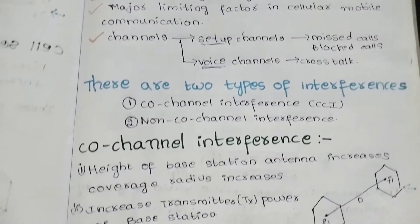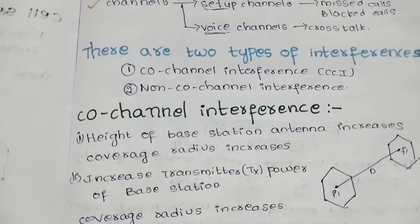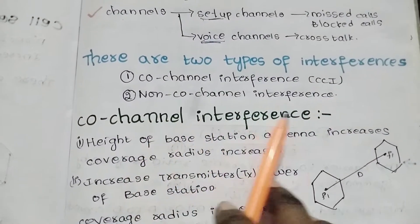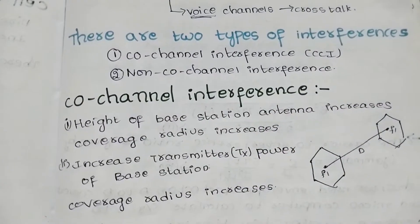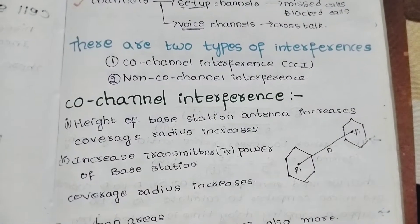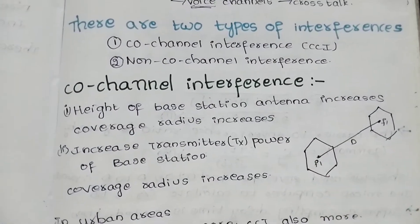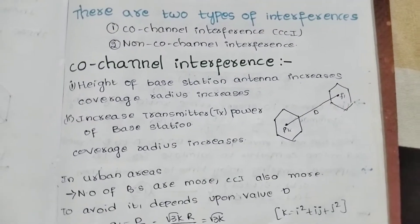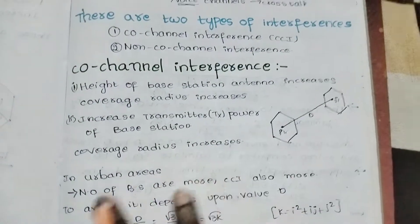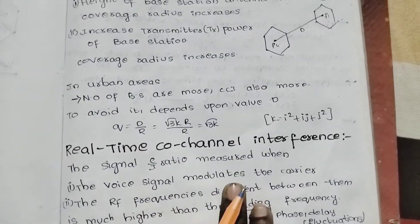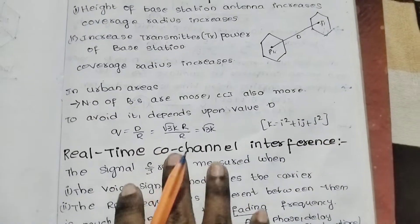In interference, there are two types: co-channel interference, also called CCI, and non-co-channel interference. In this video, we will discuss real-time co-channel interference in detail.